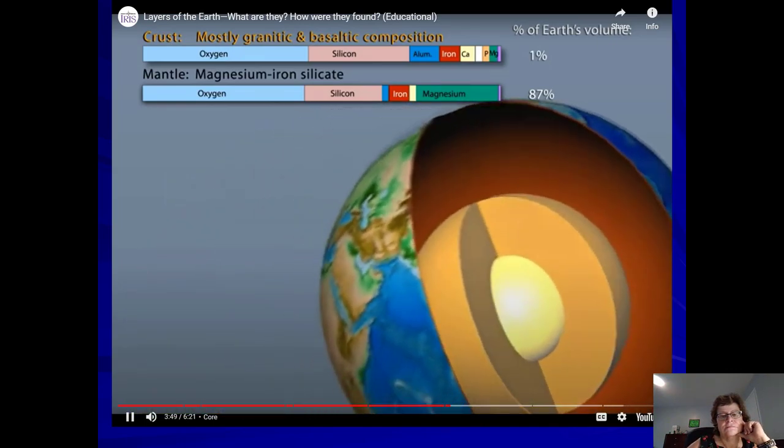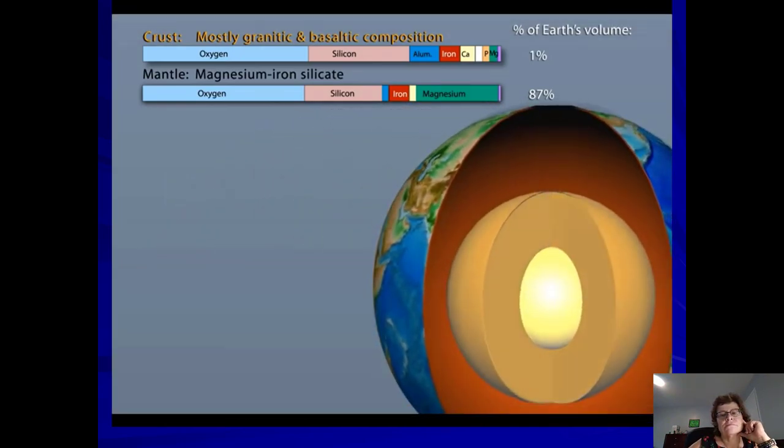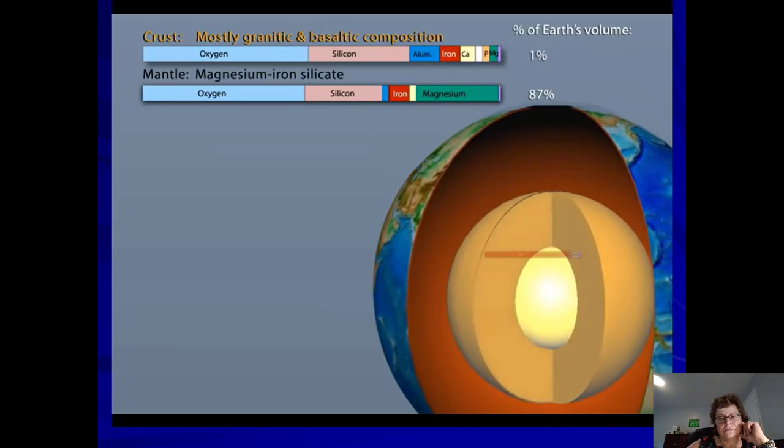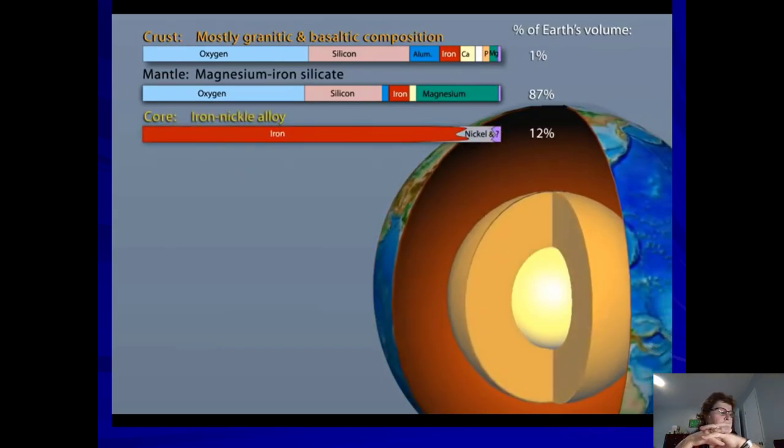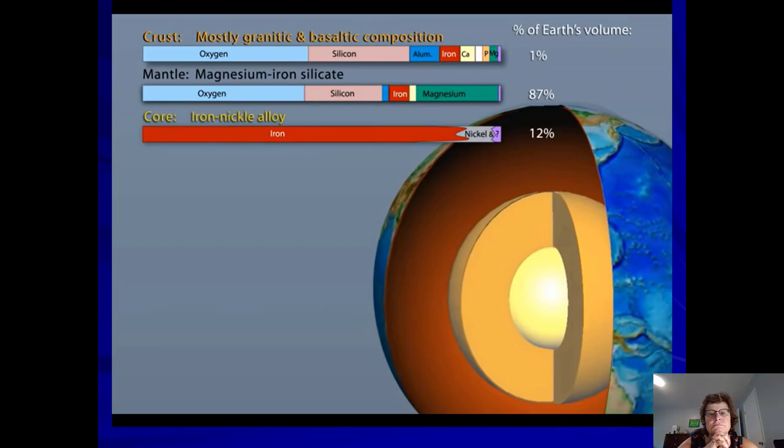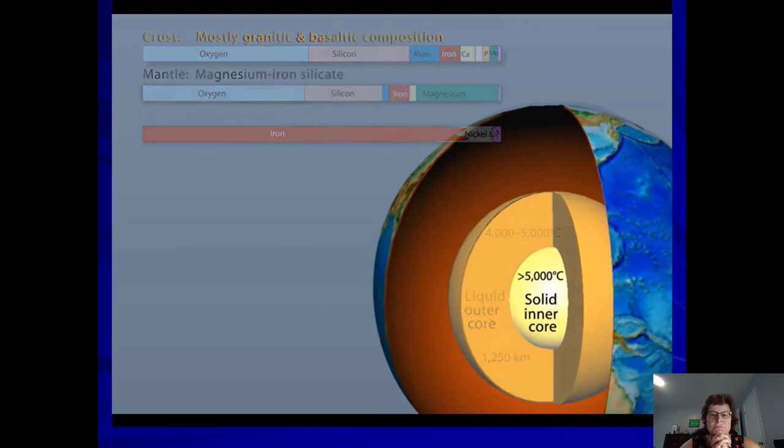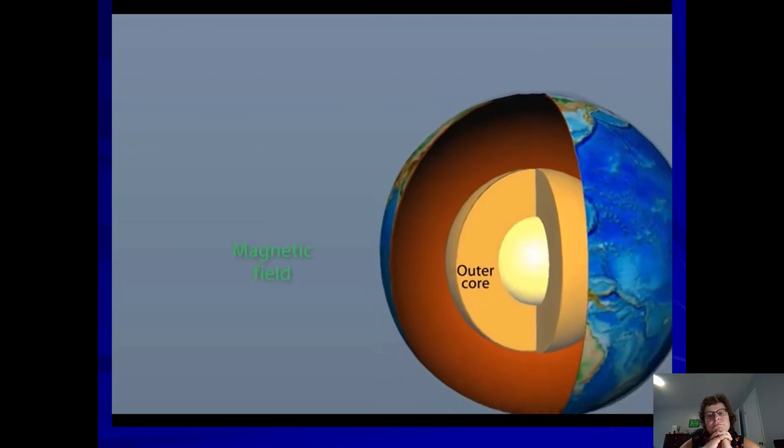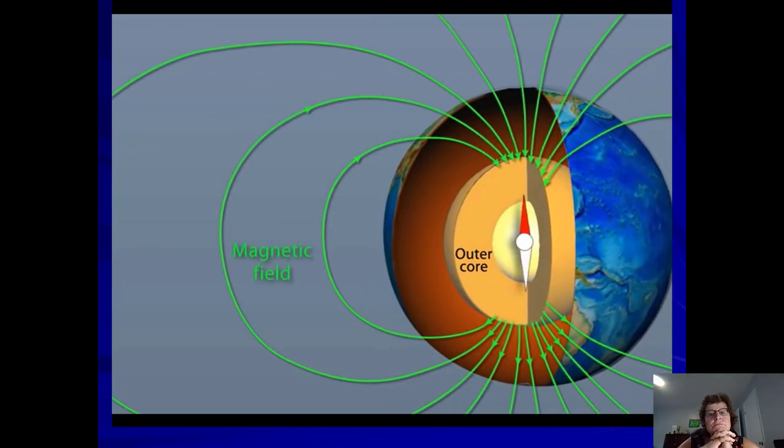At the center of the Earth is the core, which is nearly twice as dense as the mantle because it's a metallic iron alloy rather than rock. Unlike the egg yolk analogy, Earth's core is made up of two distinct parts, the liquid outer core and a solid inner core. Although the inner core is hotter than the outer core, there's also greater pressure squeezing the atoms, changing the material from liquid to solid. The liquid outer core is convecting vigorously and generates Earth's magnetic field.